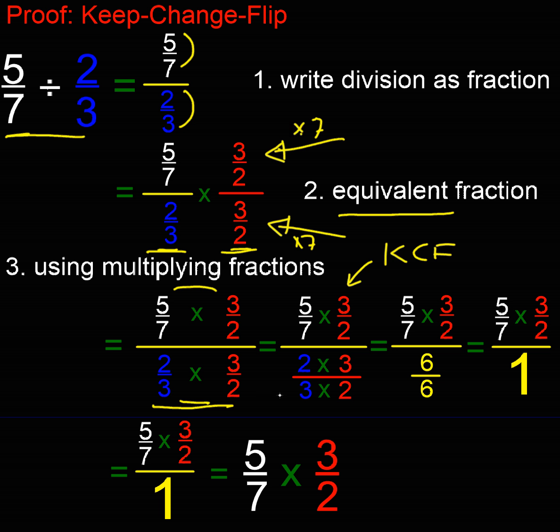So 2 thirds times 3 over 2. We know how to multiply fractions, don't we? We multiply tops, multiply bottoms. 2 times 3 is 6 and 3 times 2 is 6. Now we've got a fraction 6 over 6. Well, what does that simplify to? That simplifies to 1, doesn't it? 6 over 6 is 1.